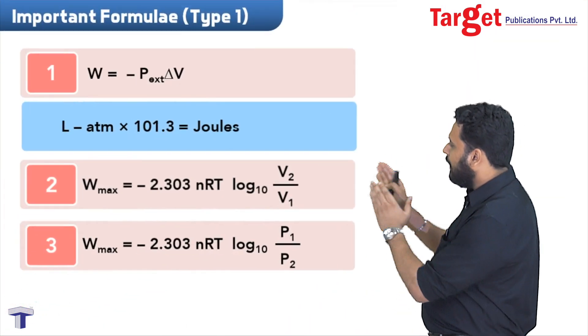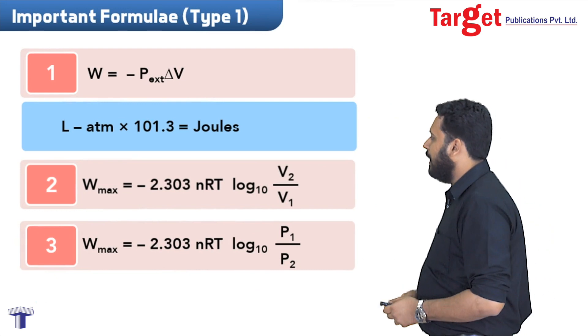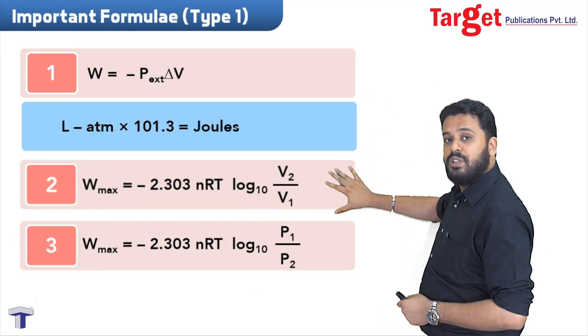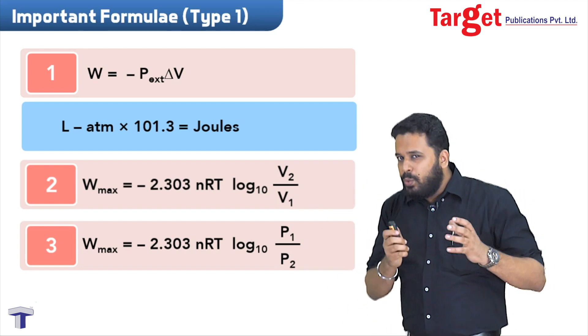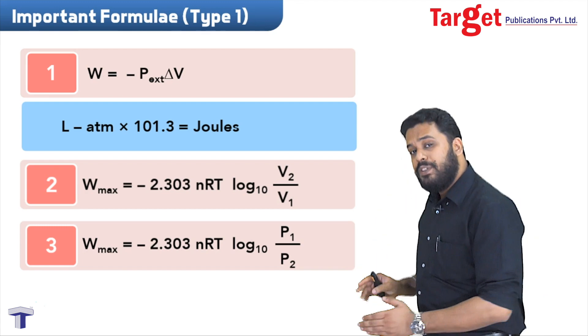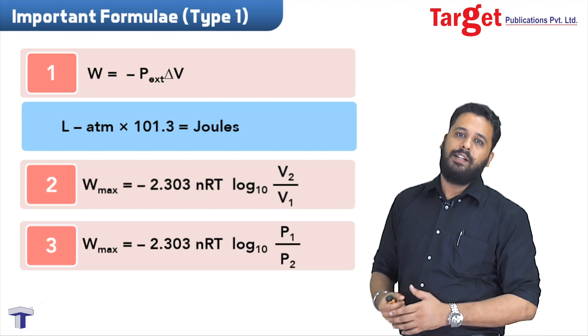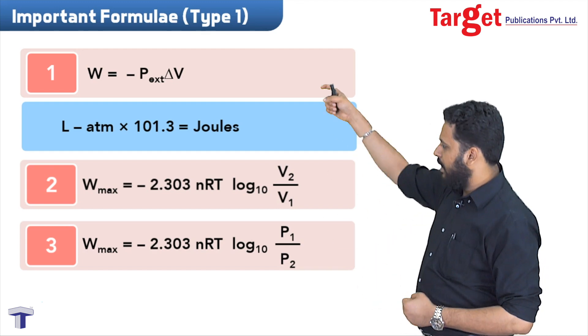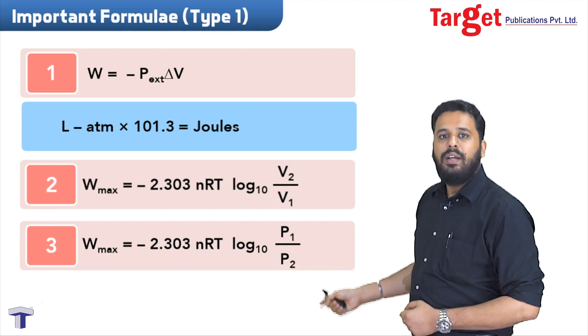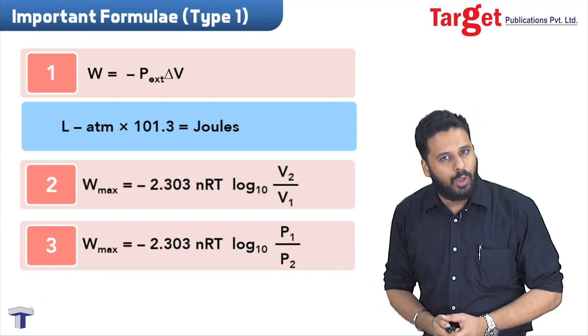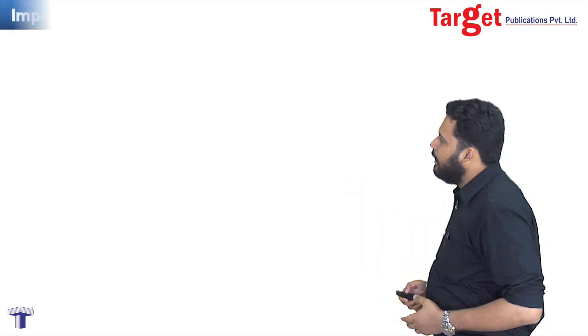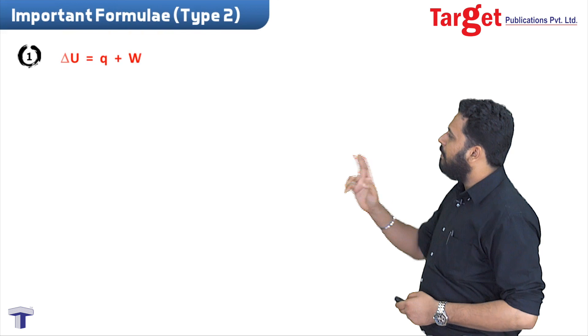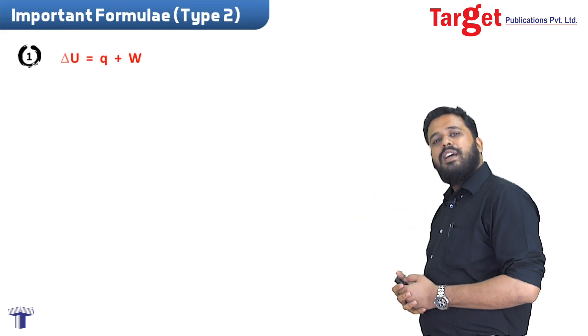Now we saw how in Type 1 we use different kinds of formulae. These are all the different formulae used when we solve Type 1 numericals in thermodynamics. Now let me quickly tell you the important formulae of Type 2, that is enthalpy related. There are around six or seven types of such formulae commonly asked from enthalpy.